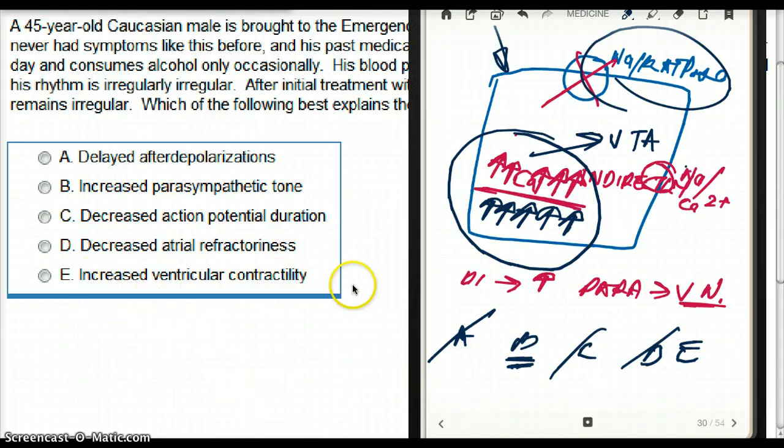E. Increased ventricular contractility. Yes, digoxin does increase ventricular contractility. That's true. But this patient has decreased heart rate. So let's answer the question, let's answer what is happening to this patient. And in this patient, the decreased heart rate is because of parasympathetic tone. So the answer is going to be choice B.